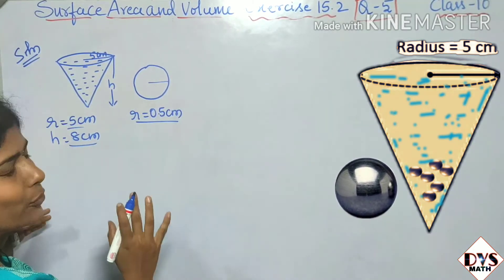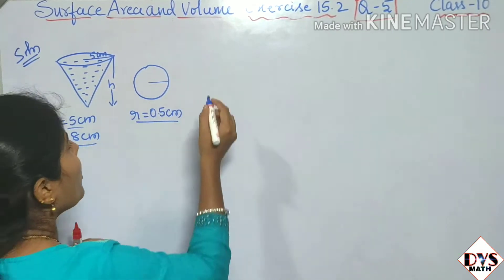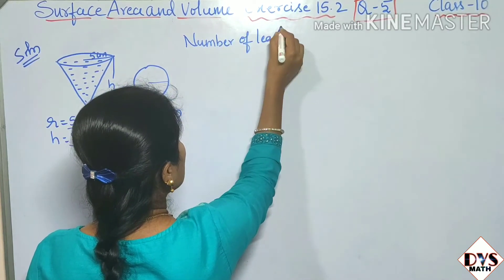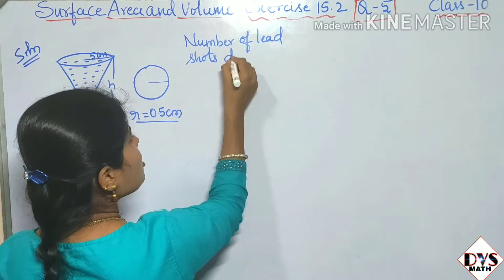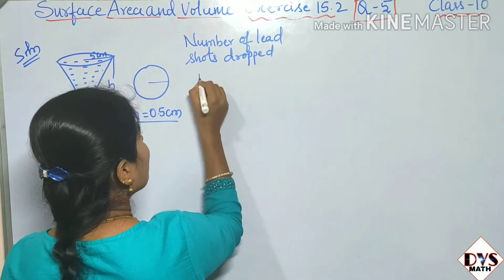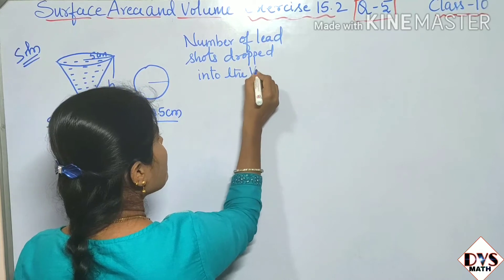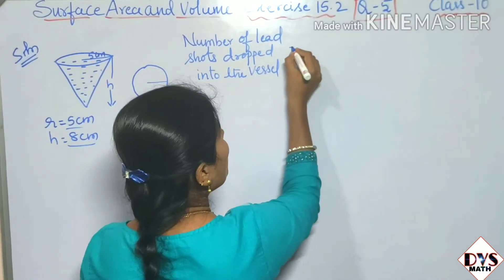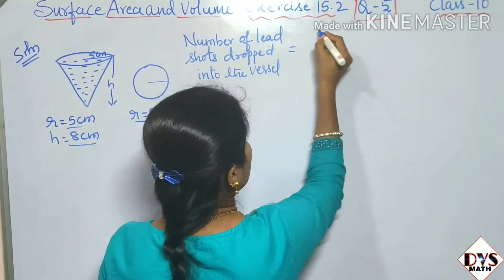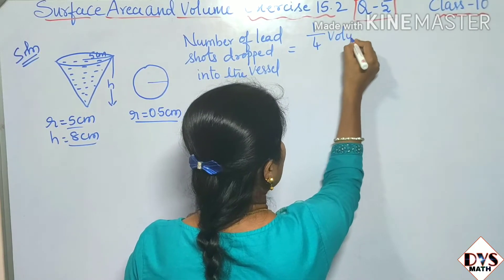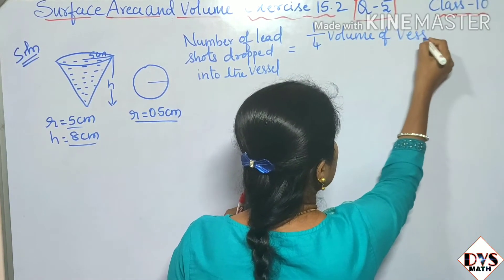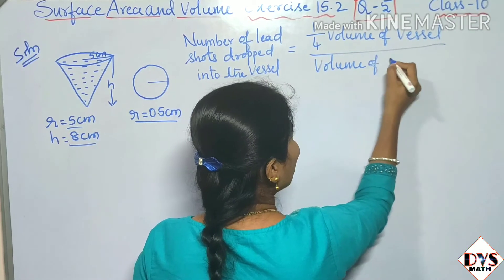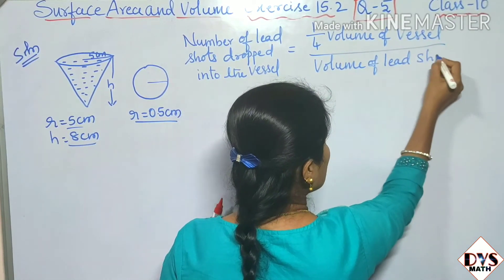Now let us write the formula. We have to find the number of lead shots dropped into the vessel. The number of lead shots dropped into the vessel equals one-fourth of the volume of the vessel divided by the volume of one lead shot.